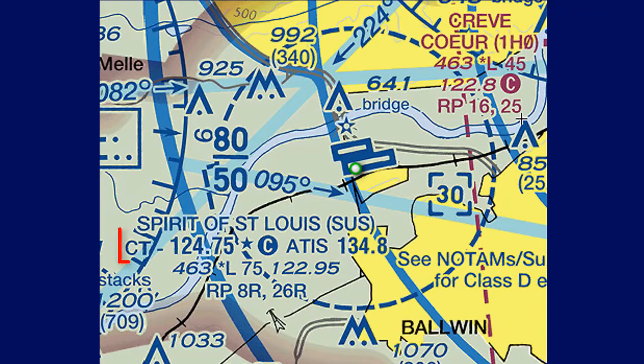If you look at the chart, you can see CT, which means control tower. The frequency next to CT is the tower frequency, which for KSUS is 124.75.